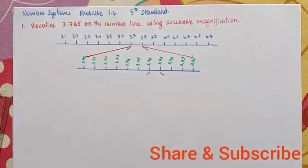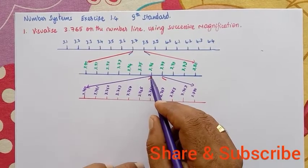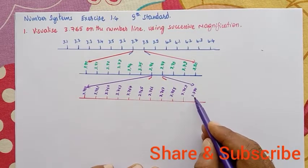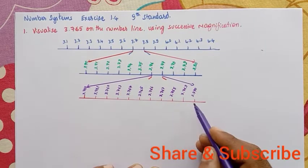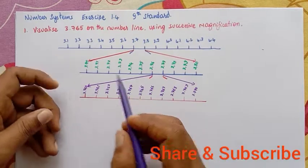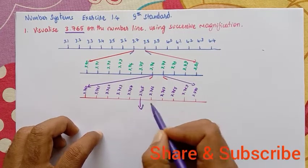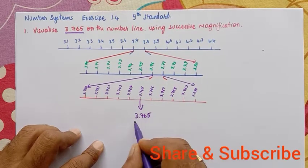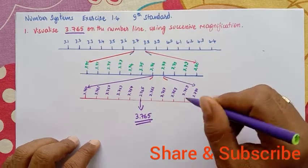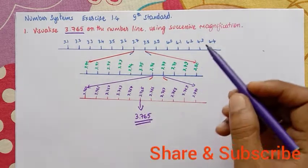We will follow the same procedure and divide this part into 10 equal parts and magnify it. We have magnified 3.76 to 3.77, divided it into 10 equal parts, and this small part has become a larger one. What we want to find is 3.765, and here it is — 3.765. This is the point. We have found 3.765 on the number line and completed it in three lines using successive magnification.